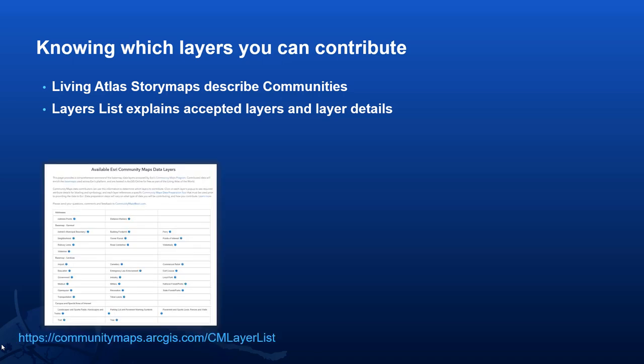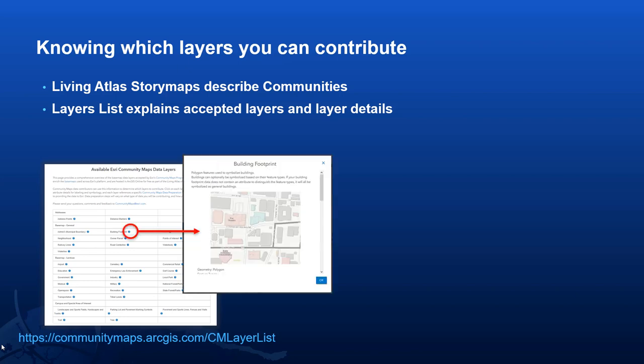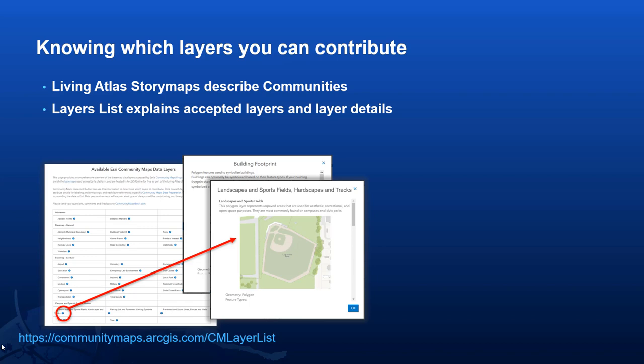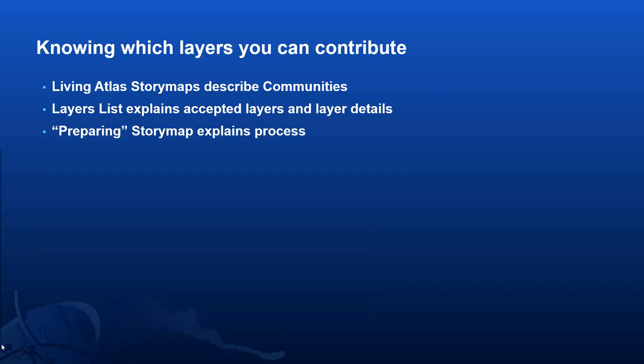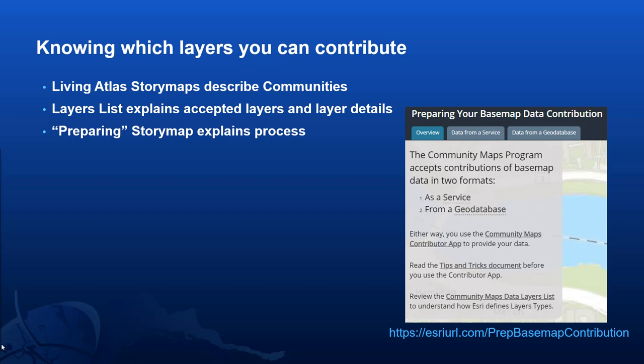If you go to the Living Atlas and use the Contribute tab, you'll see separate story maps for each of these communities. We also have a layers list that explains layers and their details — very handy if you're curious about what particular layers you can contribute. For instance, if you'd like to contribute building footprints, you can click the building footprint entry to see a pop-up explaining what we mean. The third resource is a story map explaining the process of how you would make a data contribution, including links to documents, resources, and videos about the whole contribution process.